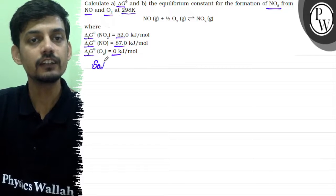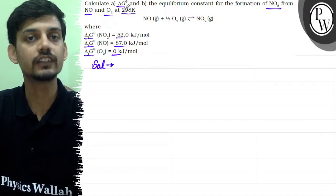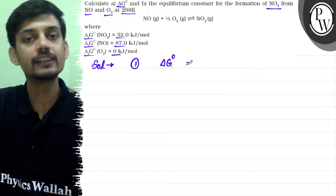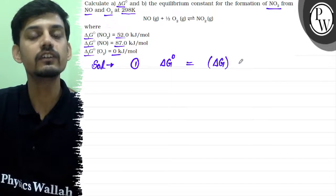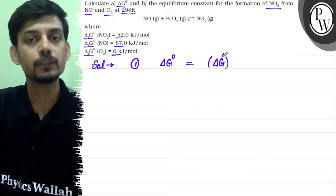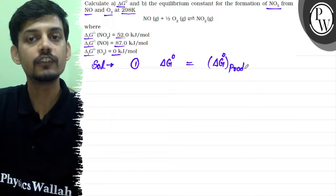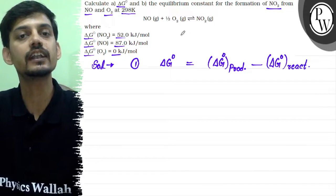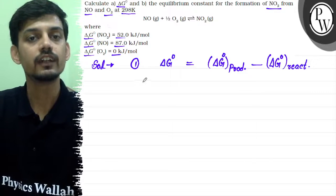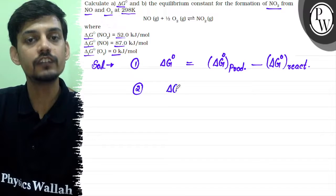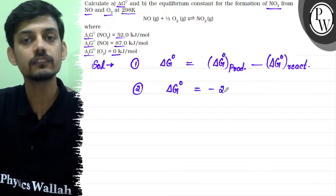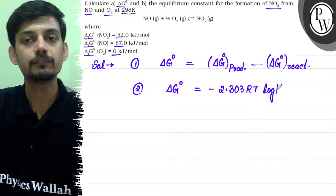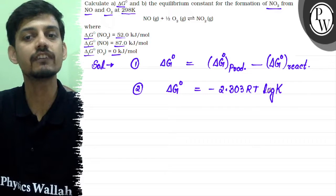We have ΔG° values given for reactants and products, and we need to find ΔG° for the reaction and the equilibrium constant. The first key concept is that ΔG° is a state function and we can use it as final minus initial — so ΔG° of reaction equals ΔG° of products minus ΔG° of all reactants. The second key concept is the relation: ΔG° = −2.303 RT log K. Using these two, we can calculate ΔG° and then find equilibrium constant K.